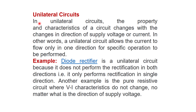In a unilateral circuit, the properties and characteristics change with the direction of supply voltage or current. In other words, a unilateral circuit allows current to flow in only one direction for a specific operation. Examples include the diode rectifier, which only performs rectification in a single direction, and the pure resistive circuit where VI characteristics do not change regardless of supply voltage direction.